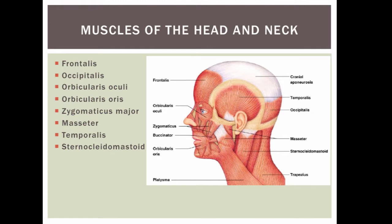Muscles of the head and neck. Up top we have the frontalis and the occipitalis, which is basically one muscle with a tendon going across the top. We have the orbicularis oculi, which is a circular muscle going around the eye, and the orbicularis oris, which is a circular muscle going around the mouth.